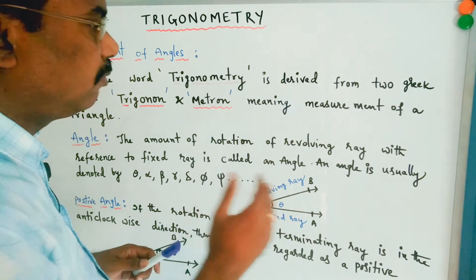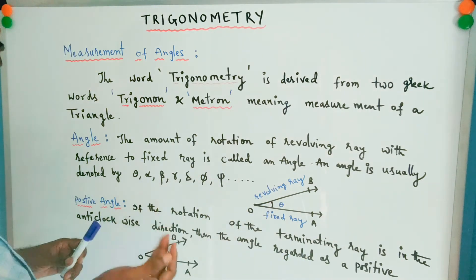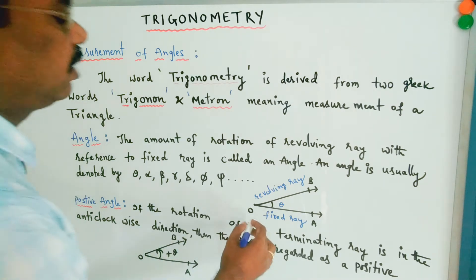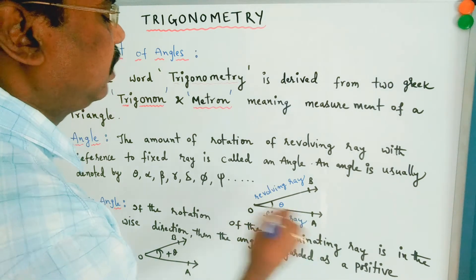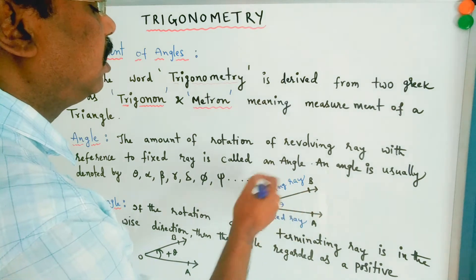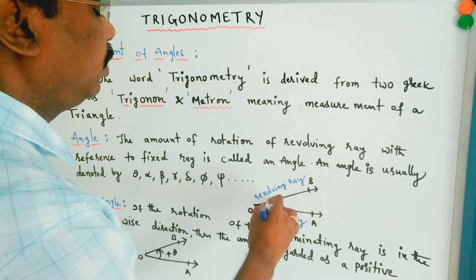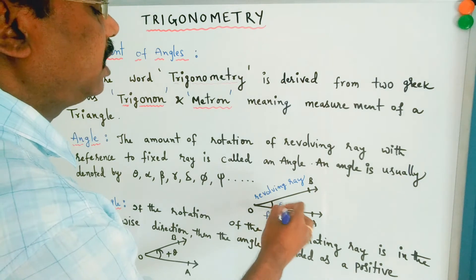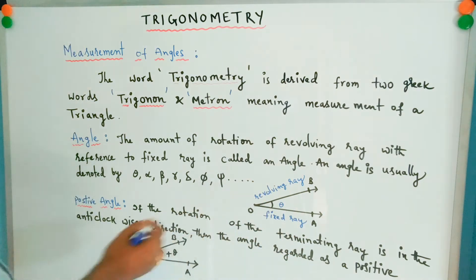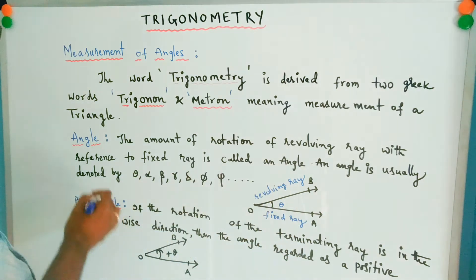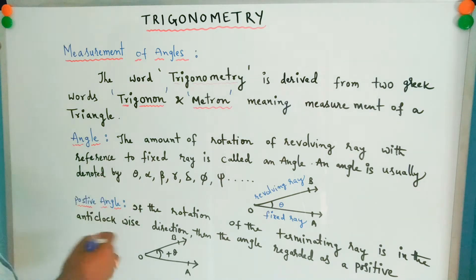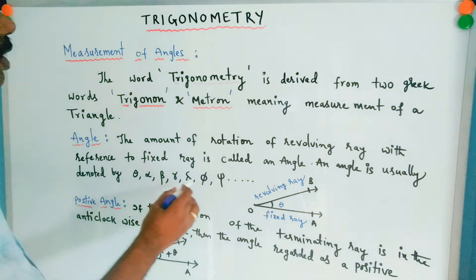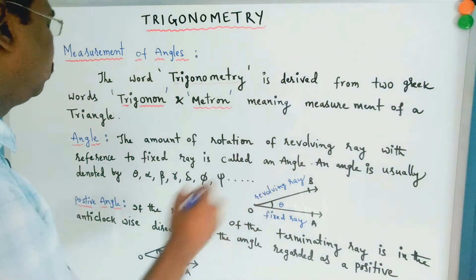What is meant by an angle? An angle means the amount of rotation of a revolving ray with reference to a fixed ray. Here OA is the fixed ray, OB is the revolving ray, and the space between both is called an angle. Your theta is the angle. Angles are usually denoted by Greek letters: theta, alpha, beta, gamma, delta, pi, psi, and so on.